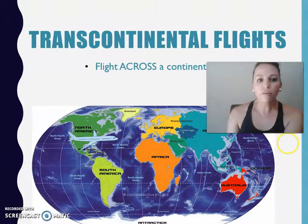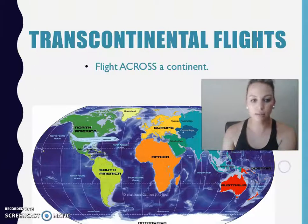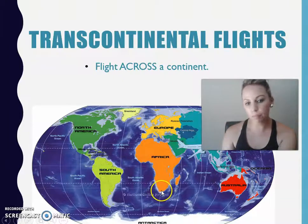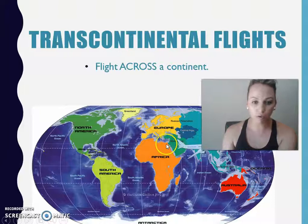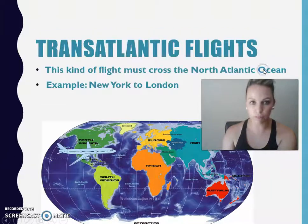Then we have transcontinental flights. This is when we fly across a continent, as shown on the map. For example, a flight from South Africa that arrives in Egypt at the top of the African continent — this flight crosses the African continent.